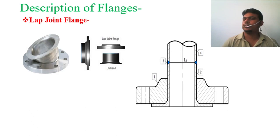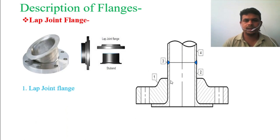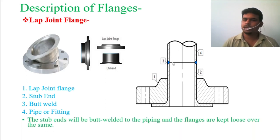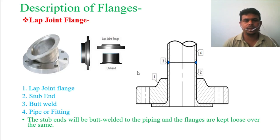In the figure: number one is the lap joint flange, number two is the stub-in, number three is the butt joint — the pipe and stub-in joint configuration will be a butt weld — and number four is the pipe or fitting. The stub-ins are butt welded to the piping and the flange is kept loose over the pipe. After the connection is complete, the flange is fixed inside the pipe and cannot be removed; it becomes the loose part of the flange.